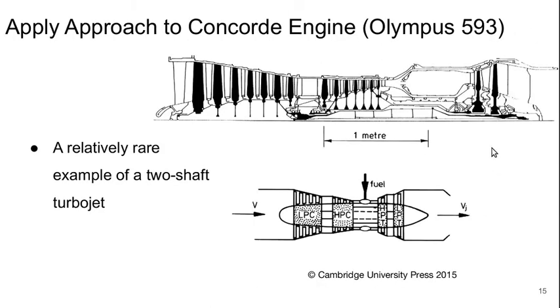Okay, so enough theorizing. Let's go ahead and apply this approach to see how it works in practice. We'll apply this to the Concorde engines, the Rolls-Royce Olympus 593. There's not that many two-shaft turbojet engines out there, so this is a relatively rare example. It's a perfect one for what we want to look at here.